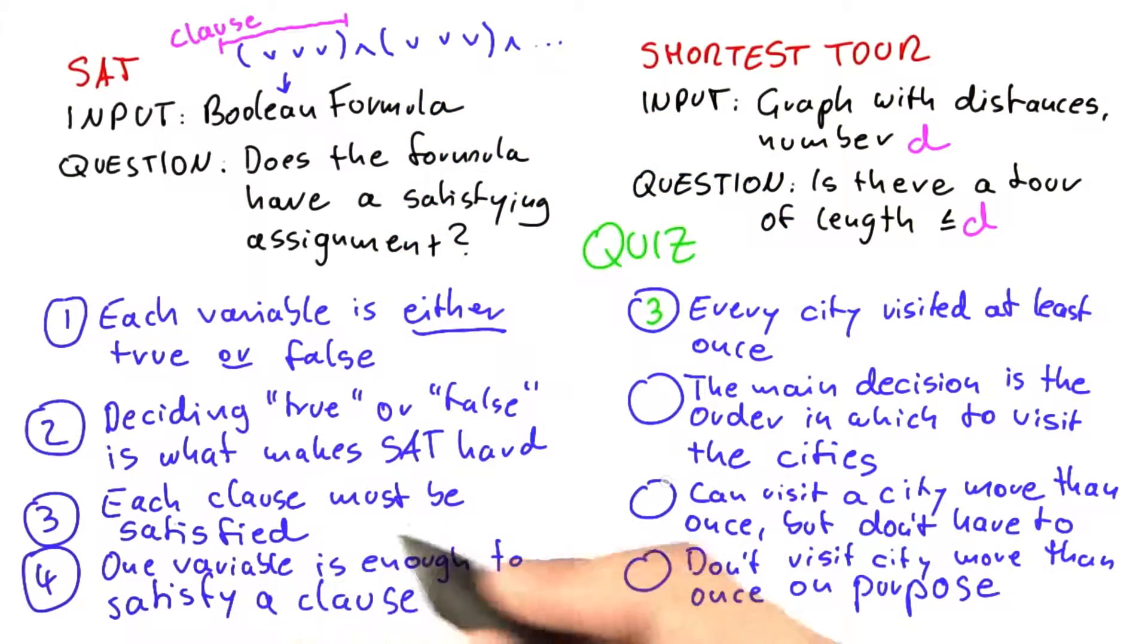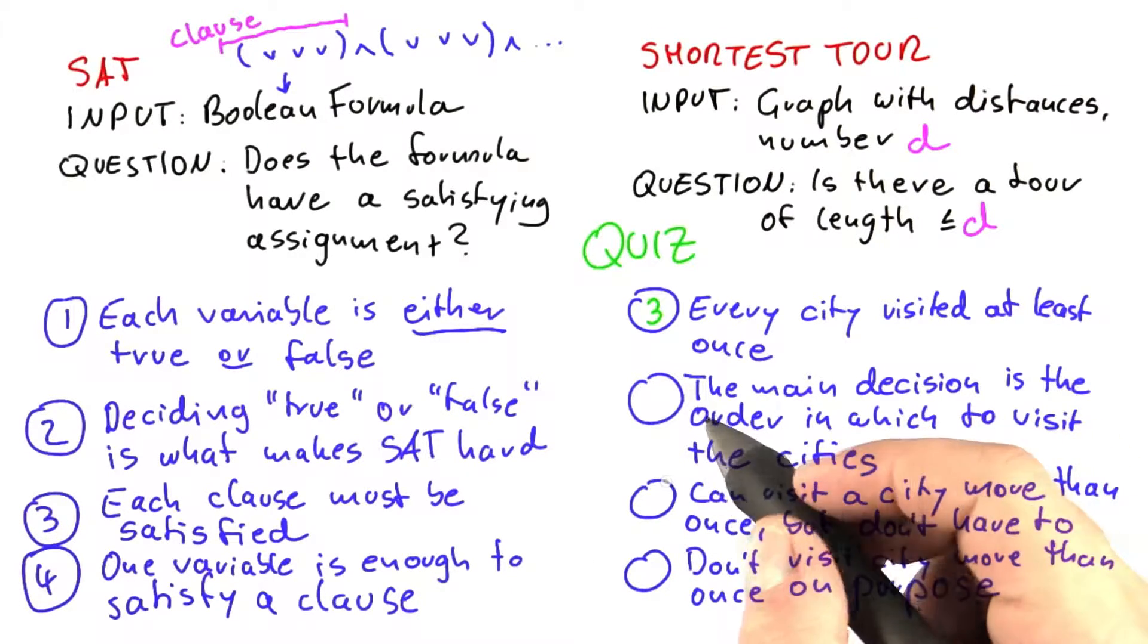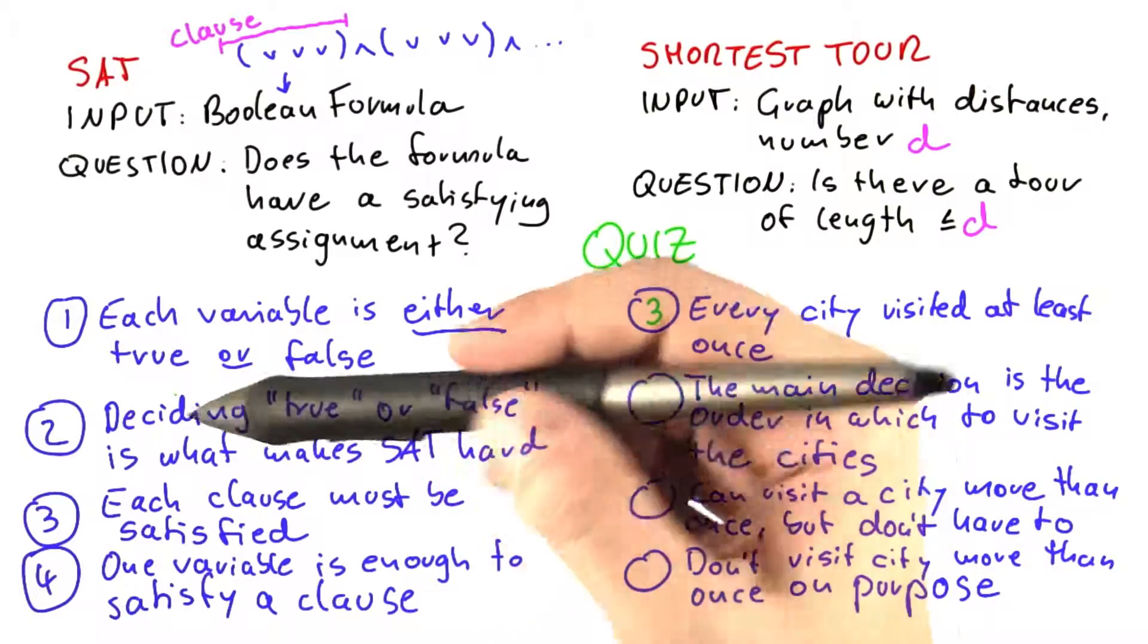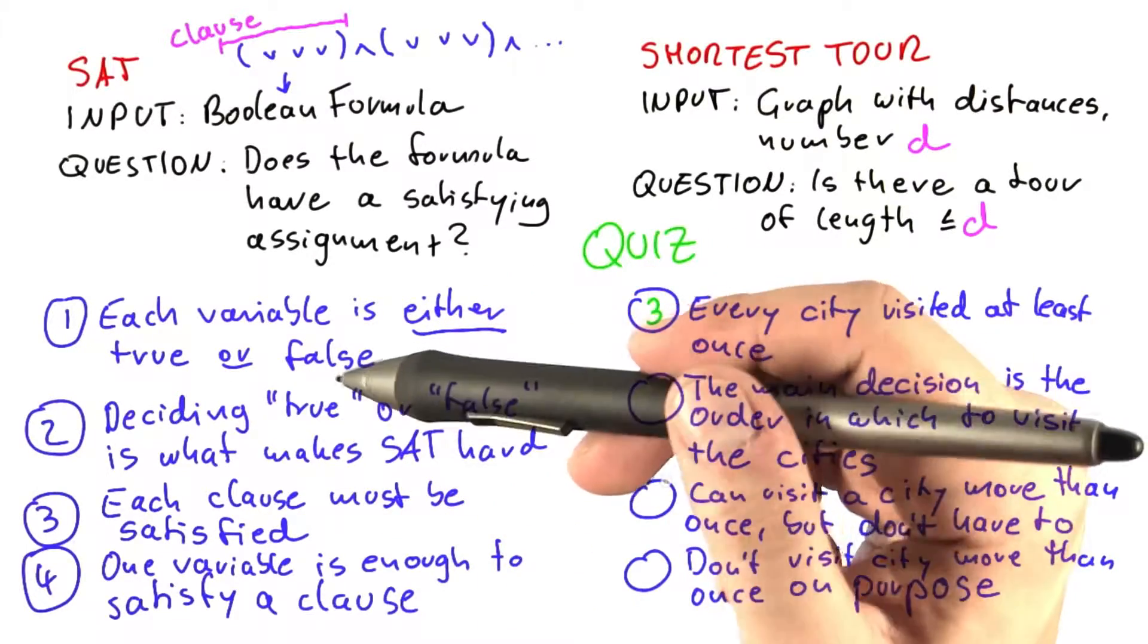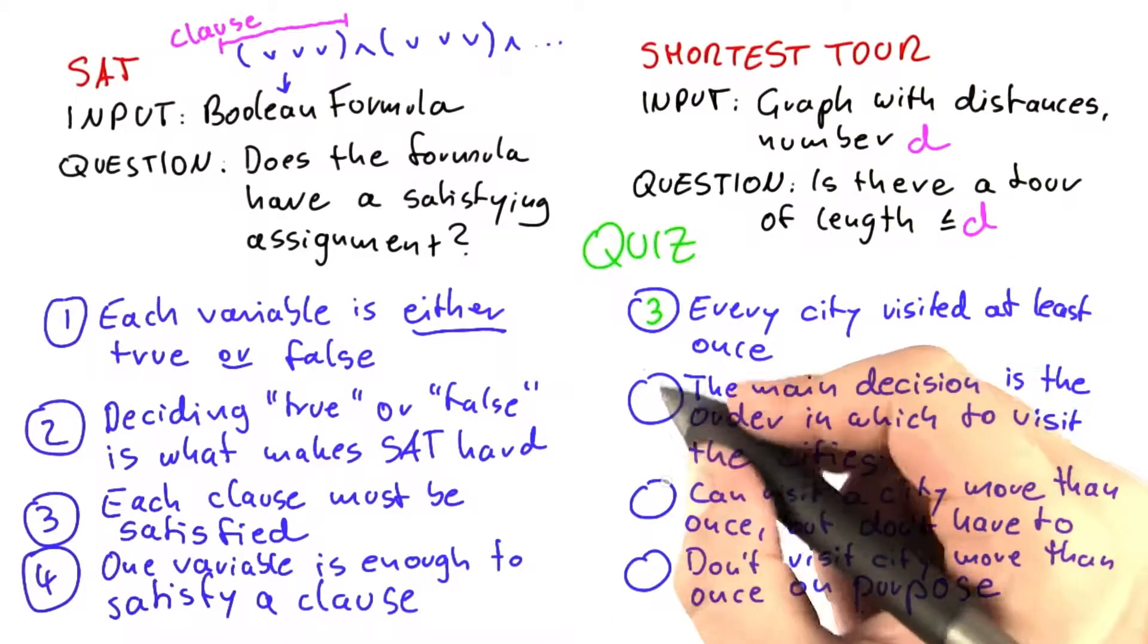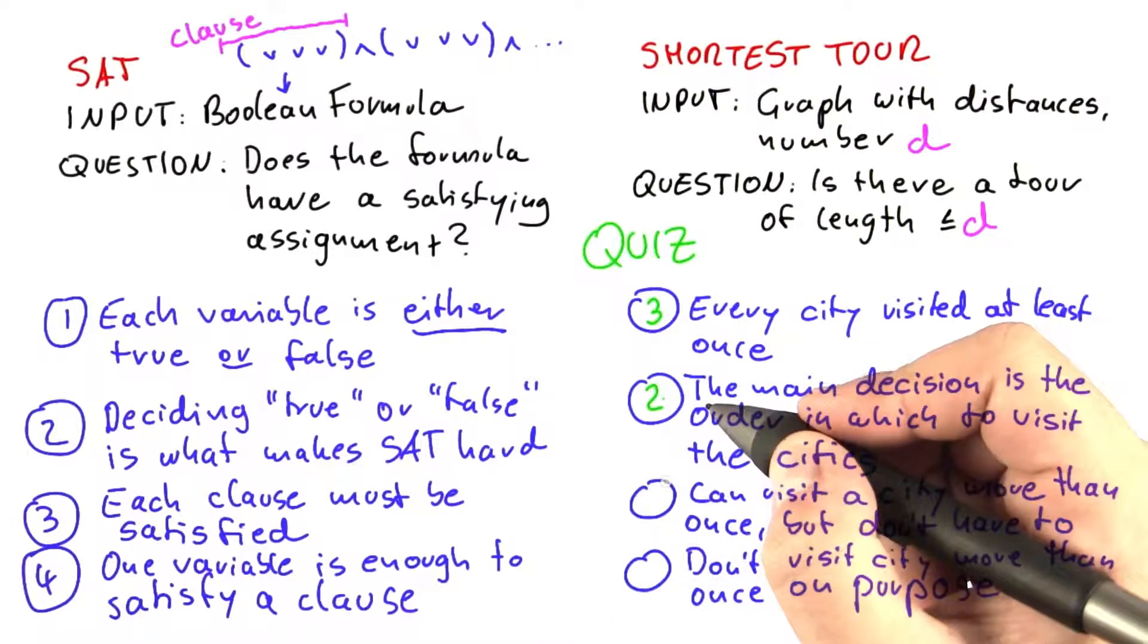So I think this one here is closely related to this one down here. The main decision is the order in which to visit the cities. That is what makes this problem hard, and the analogous decision that you have to make for SAT is deciding which variables to set to true or false. So I think these two here are quite closely related.